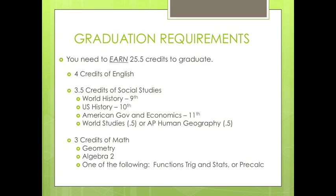4 credits of English — you will need to take one per year. Social Studies: 3.5 credits. You're required to take or have taken the following: World History in 9th grade, US or AP US History in 10th grade, American Government or AP Government and Economics or AP Macroeconomics in 11th grade, and World Studies or AP Human Geography in 12th grade.